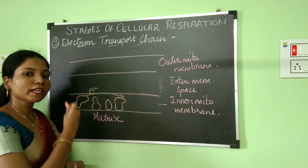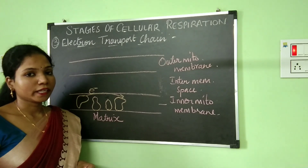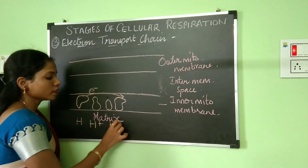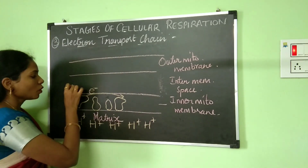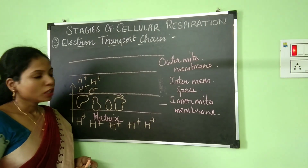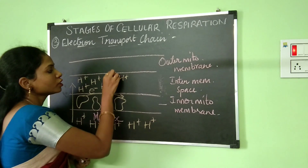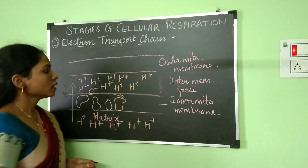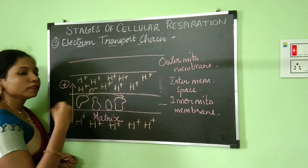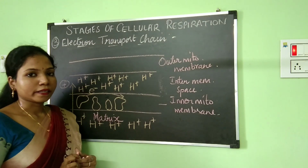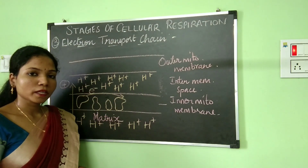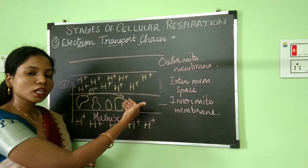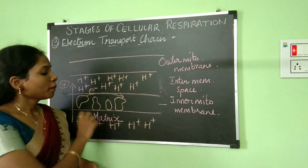When the electrons are traveling along the enzyme complexes, energy is going to be generated. With the help of the energy generated during electron transport, hydrogen ions present in the inner mitochondrial matrix will be pumped into the intermembrane space. As more and more hydrogen ions are pumped into the intermembrane space, there is going to be a positive charge in the intermembrane space and a negative charge in the mitochondrial matrix due to accumulation of hydrogen ions.